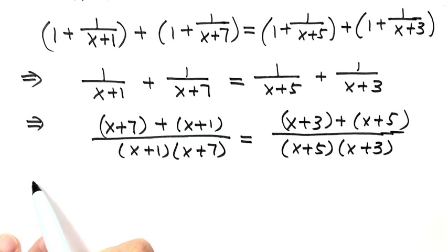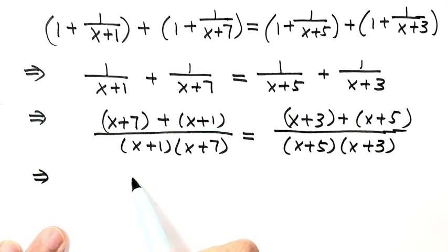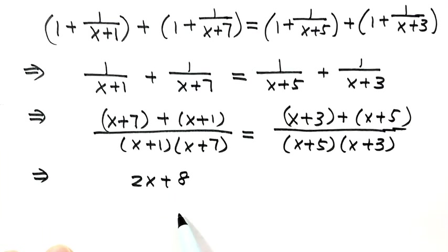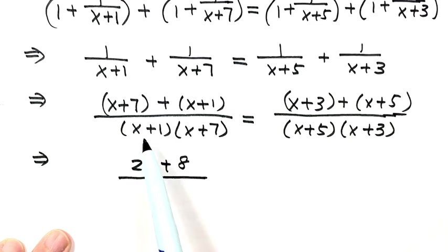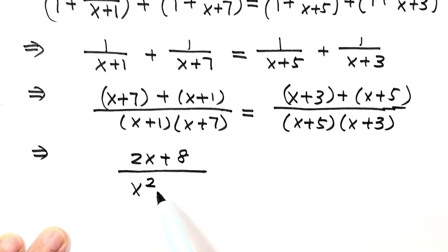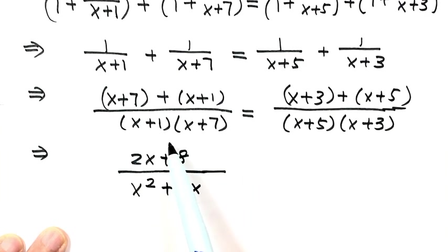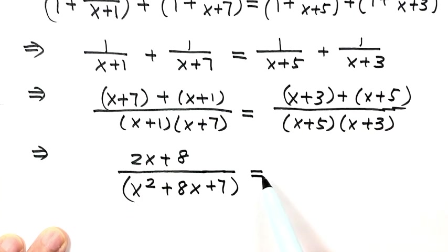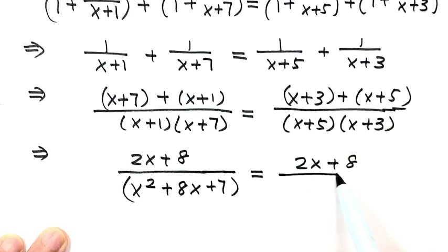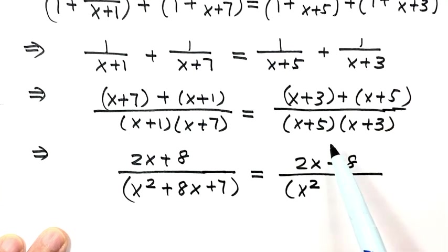Now let's simplify the numerators. The left-hand side numerator is 2x+8, and expanding the denominator gives x²+8x+7. The right-hand side numerator is also 2x+8, and expanding the denominator gives x²+8x+15.